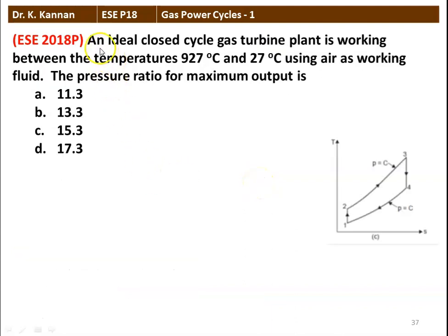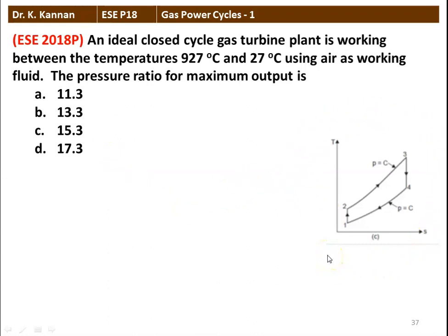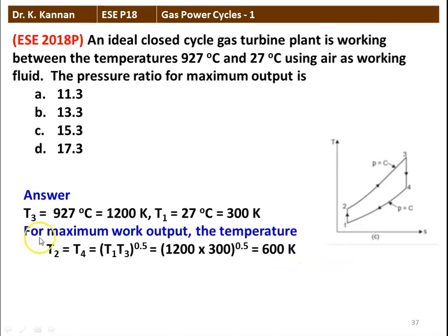The next question: an ideal closed cycle gas turbine plant is working between temperatures of 927°C and 27°C using air as the working fluid. The pressure ratio for maximum work output — options are 11.3, 13.3, 15.3, and 17.3. This is the temperature-entropy diagram of the Brayton cycle. T3, the maximum temperature, is 927°C which is 1200 Kelvin. T1, the minimum temperature, is 27°C which is 300 Kelvin.